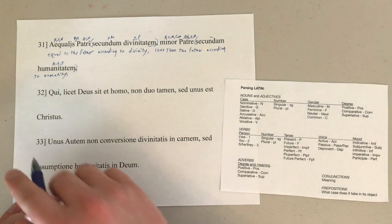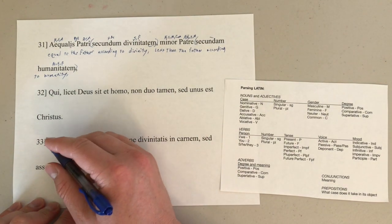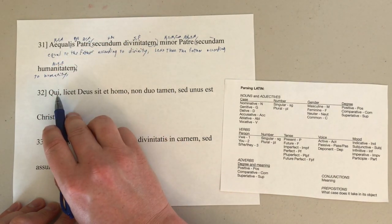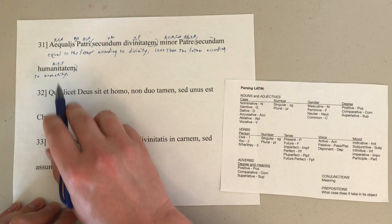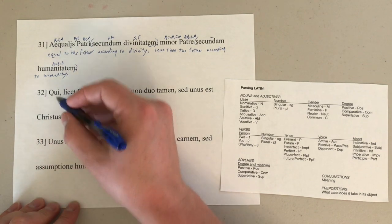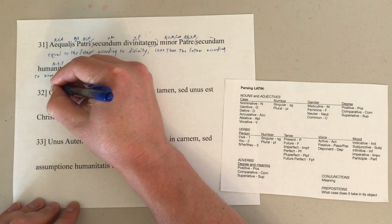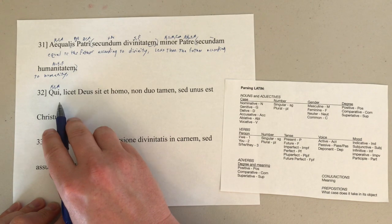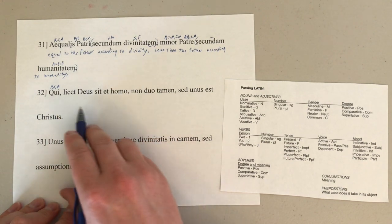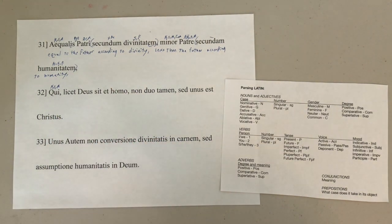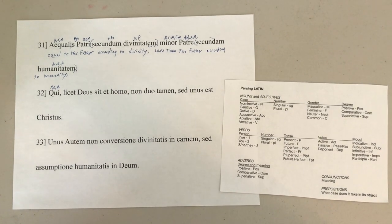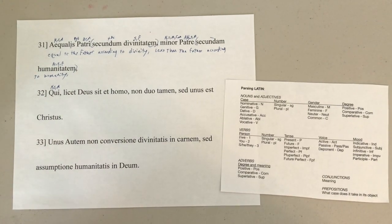We move on to verse 32, and we start off immediately with a relative pronoun, which is going to be either nominative singular or nominative plural, because of that -i. We know Jesus is still singular here, so nominative, singular, masculine. Who — and then we get to this subordinate clause. Liket is a bit of a trouble word for us here. Normally we would look at that and go, oh, this is the verb, and it means 'it is permitted' or 'it is allowed.'